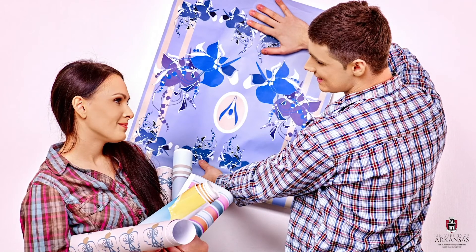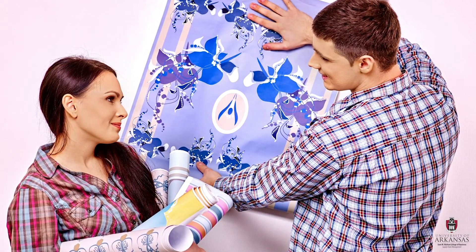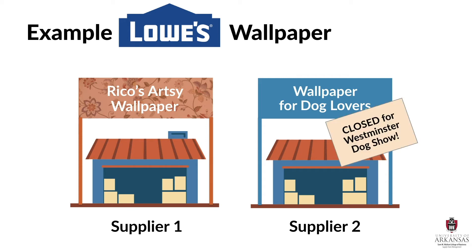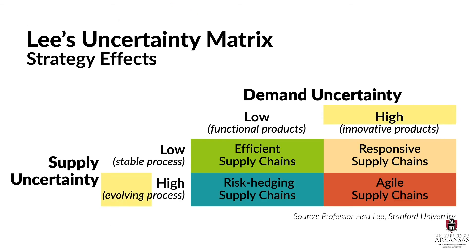Well, maybe not. Should Lowe's implement an efficient supply chain strategy for all their products? They could, but the results would be disastrous for other product categories like wallpaper. Wallpaper is a more fashion-oriented, innovative product where consumer preferences constantly change and demand patterns are unpredictable. Wallpaper suppliers are limited in number and known to have less-than-perfect on-time delivery performance. Therefore, in the wallpaper category, demand uncertainty and supply uncertainty are high. Professor Lee's matrix would suggest we use an agile supply chain strategy, but that is not consistent with the strategy that lumber needs.